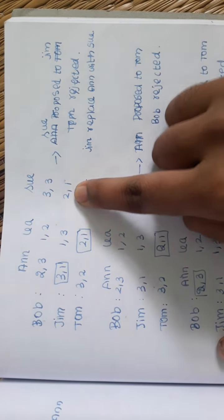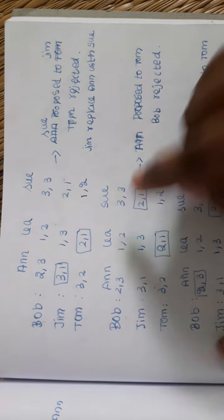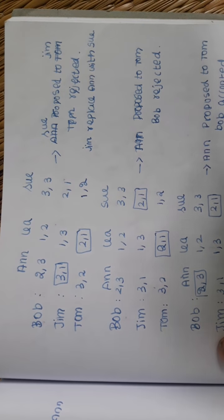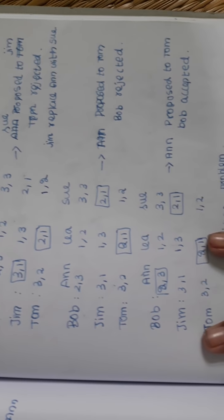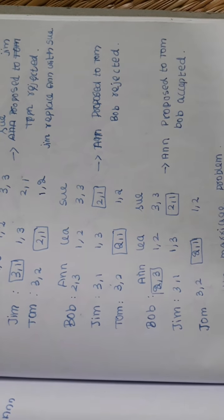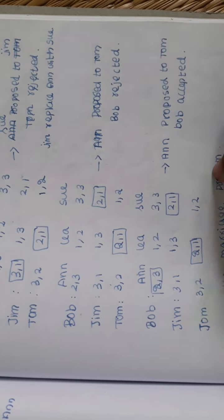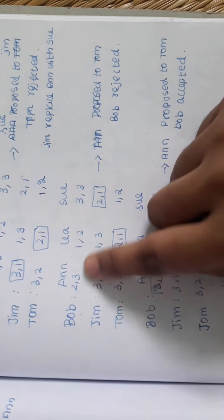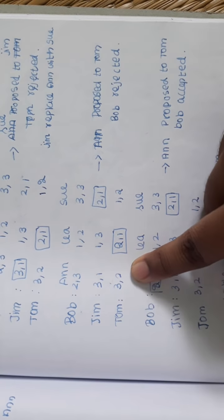So your first place, this is the first place. Now Sue can propose to Tom, but your priority is 2 and 3. So if you select the gym, you can select the gym. If you look at the priorities, this is the 2 and the 3. This is the second priority. So if you select the gym, you select the gym and you select Ann. So you reject it.